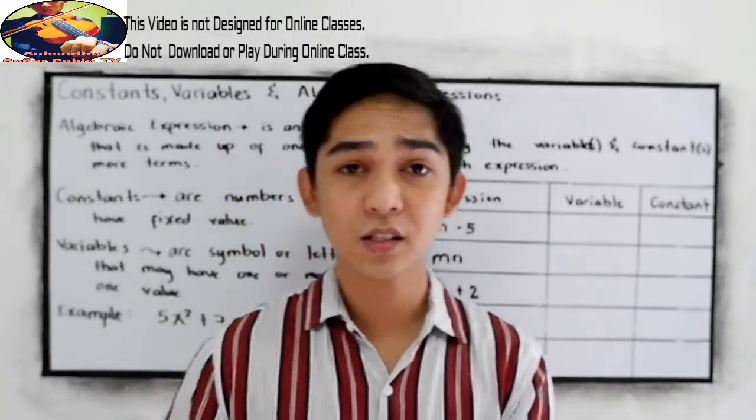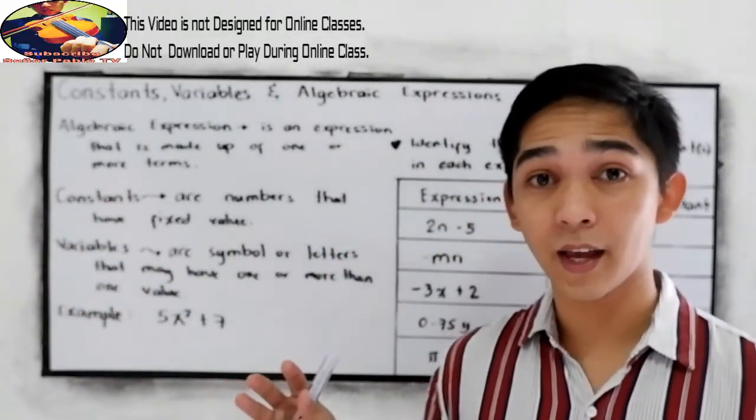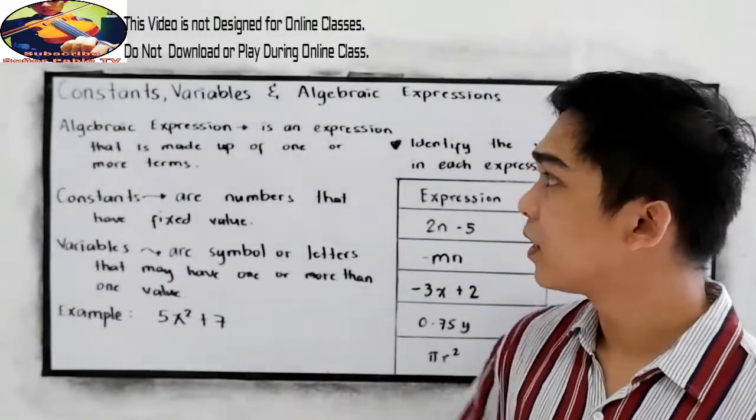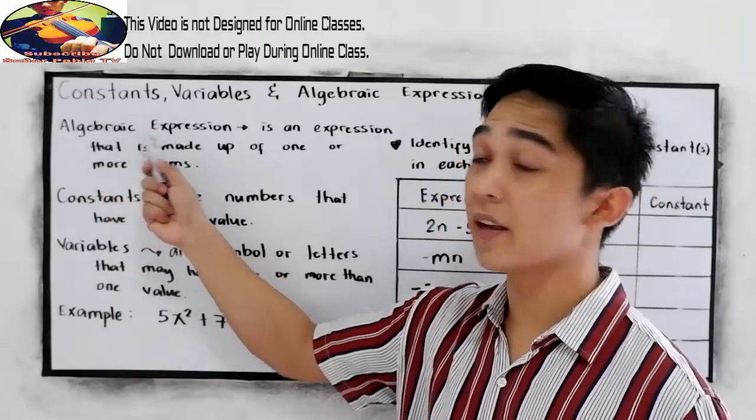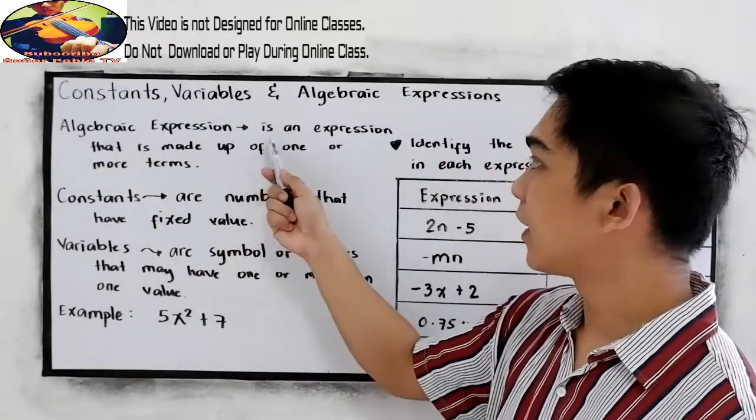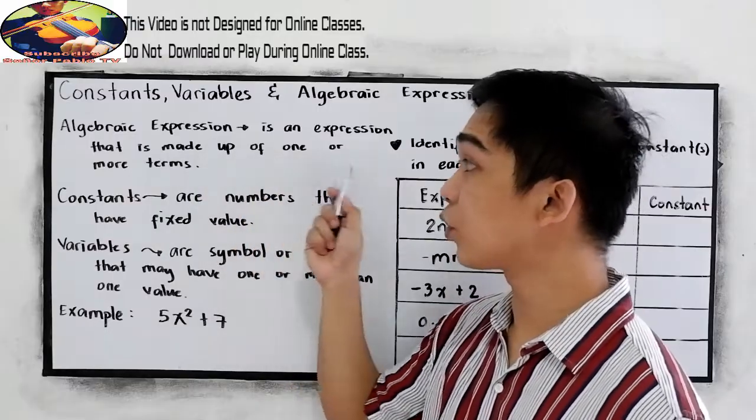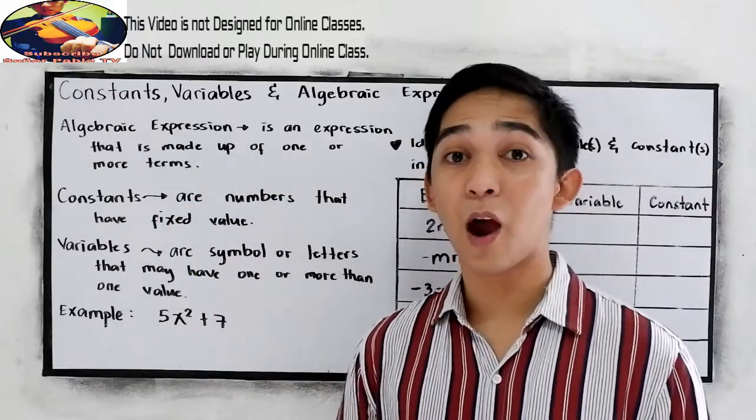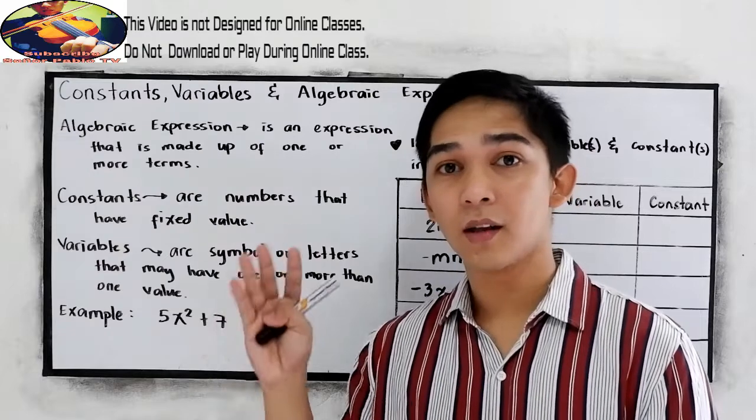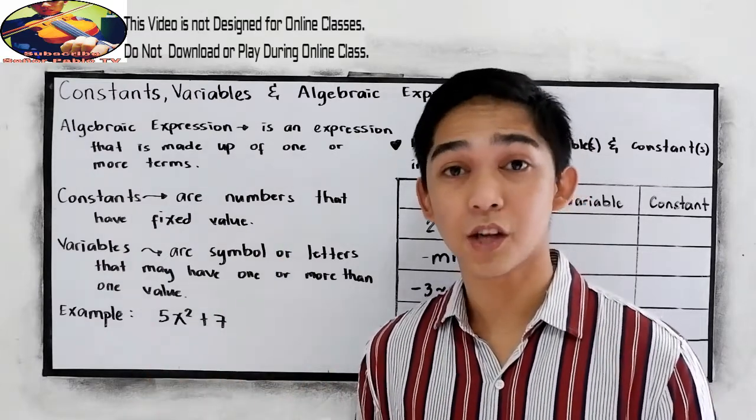Now, let us define what is a constant, variable, and algebraic expression. Let's start with the algebraic expression. It is an expression that is made up of one or more terms. Our terms are separated by addition and subtraction signs.